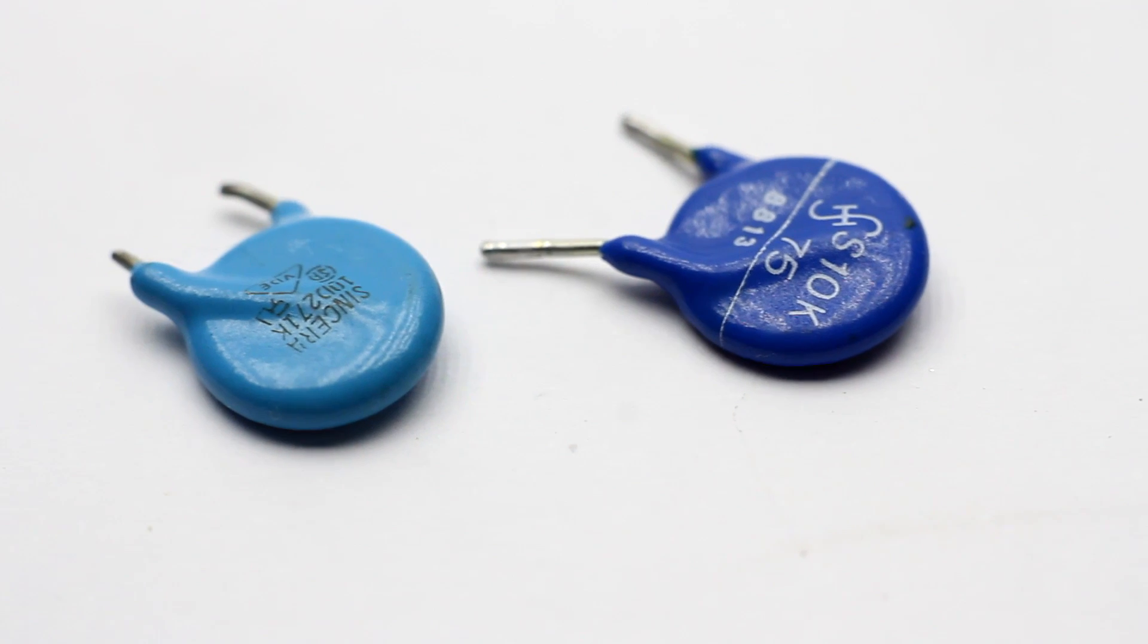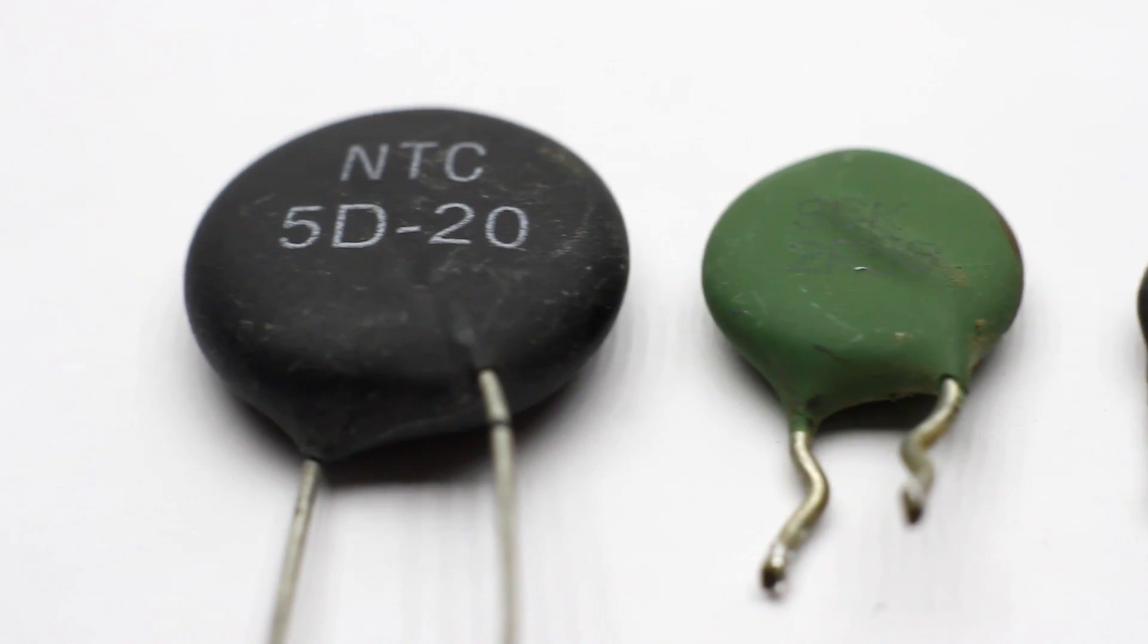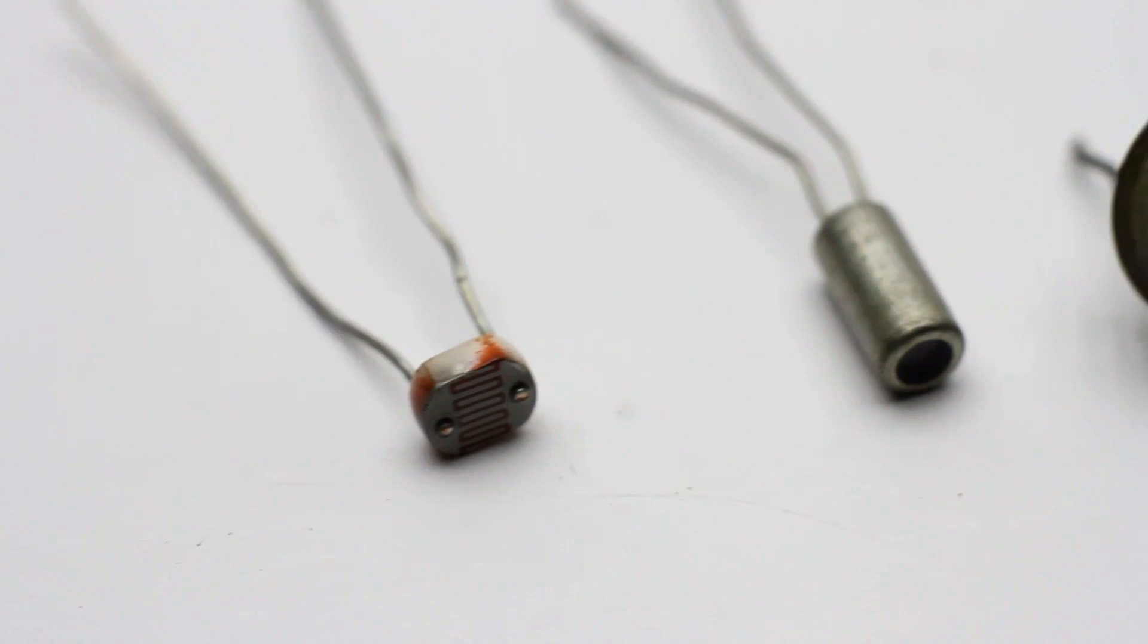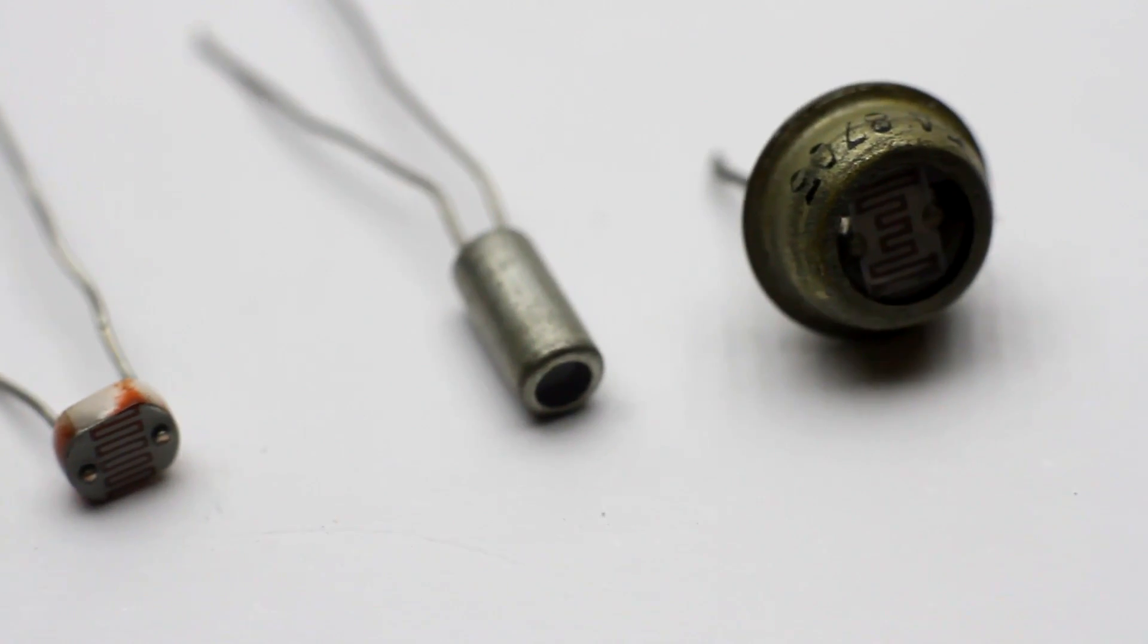Resistors could be fixed and variable. An ideal fixed resistor doesn't change its resistance. In opposite, variable resistors can change resistance depending on the temperature, pressure, light or mechanical way. The last is a conventional trimmer, where the resistance can be changed manually by the movement of the slider.